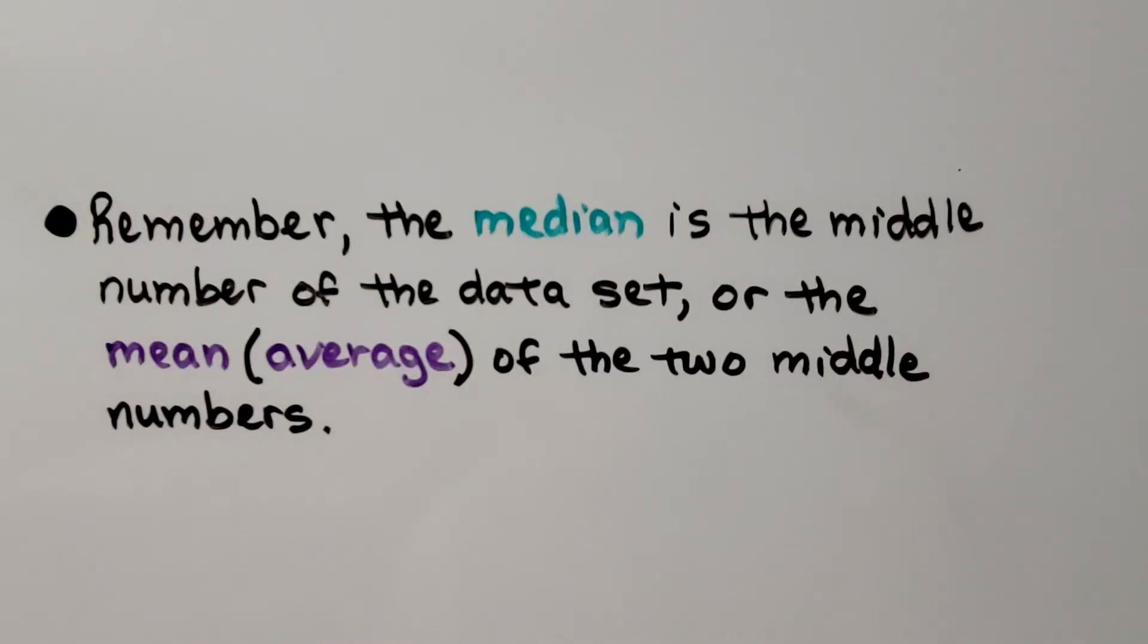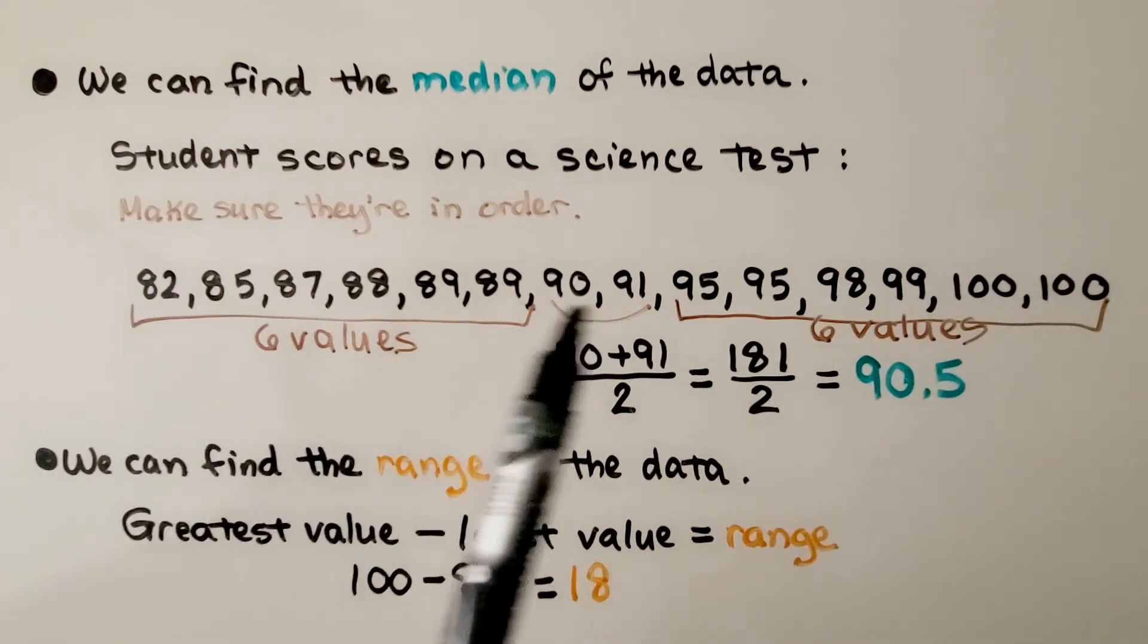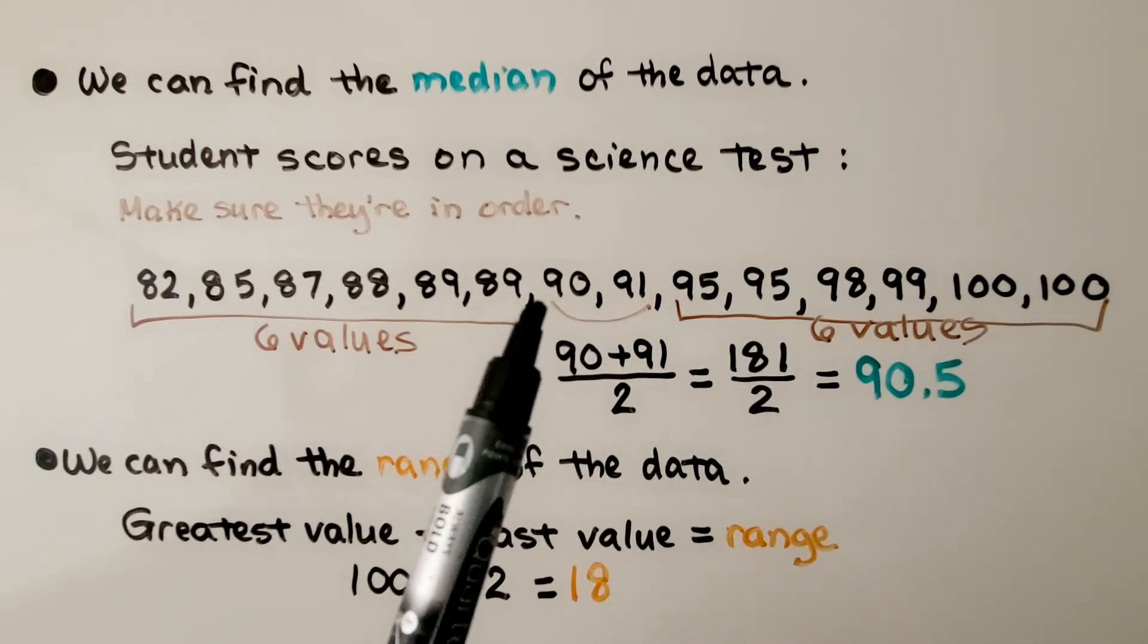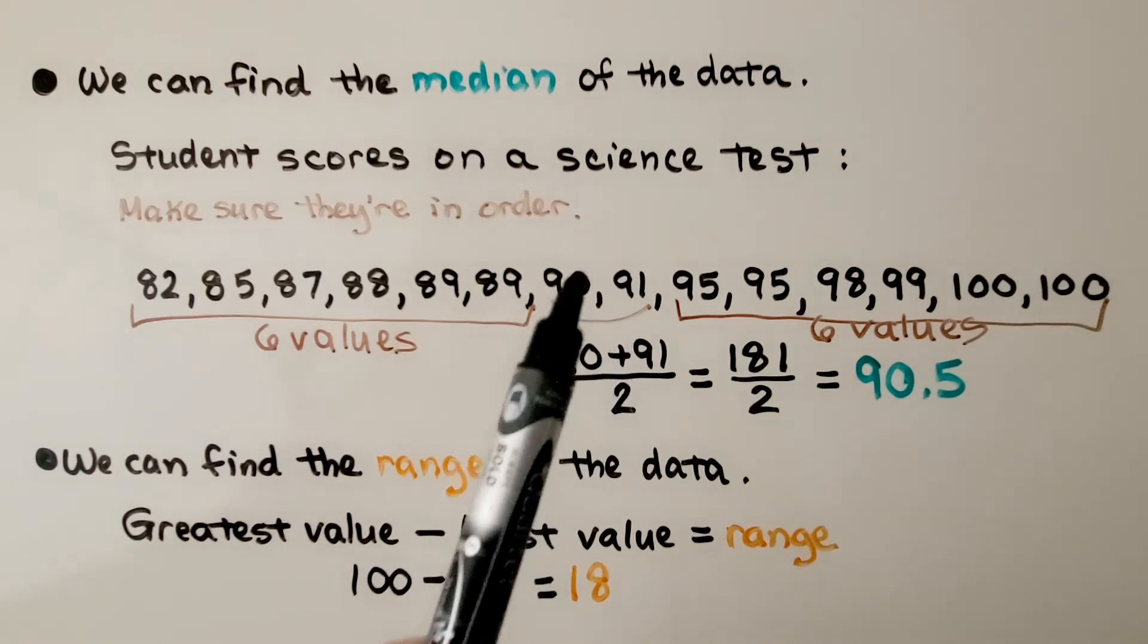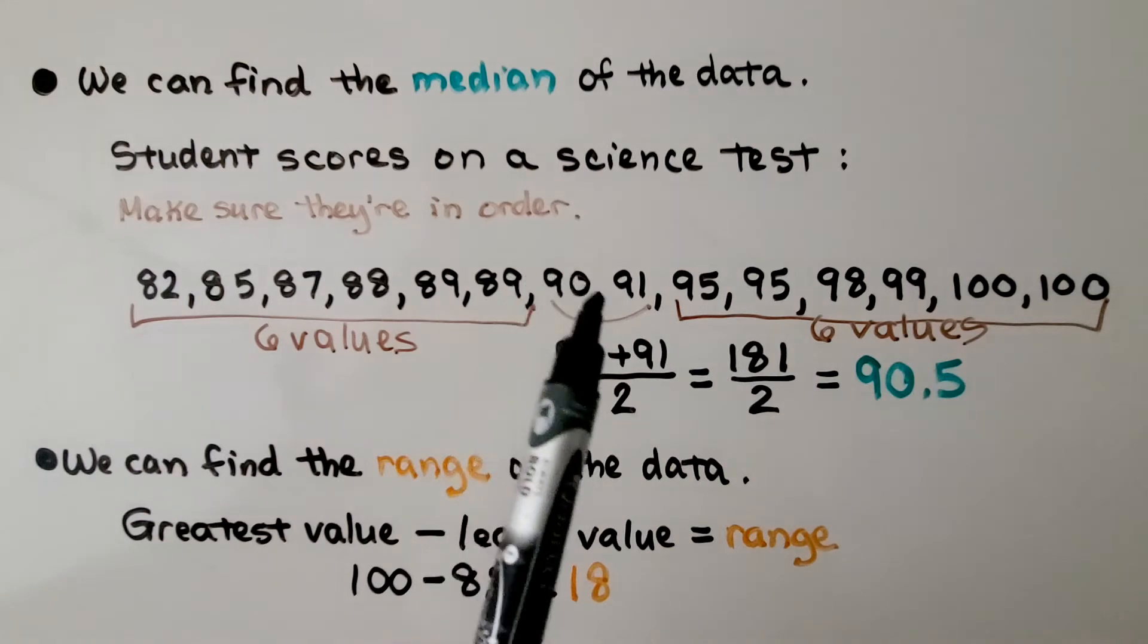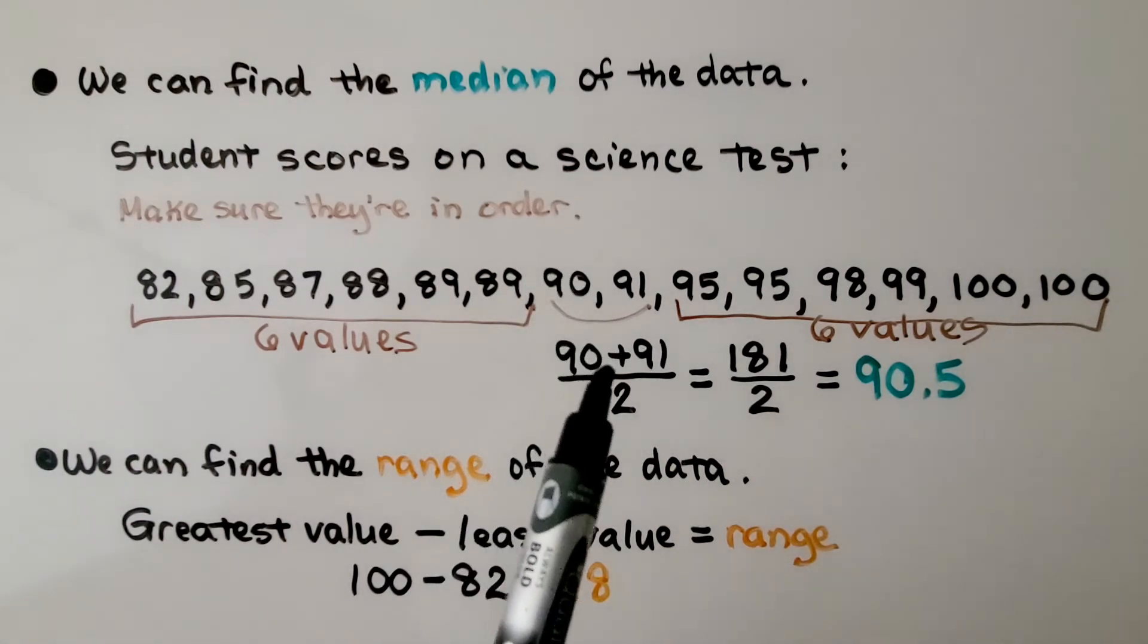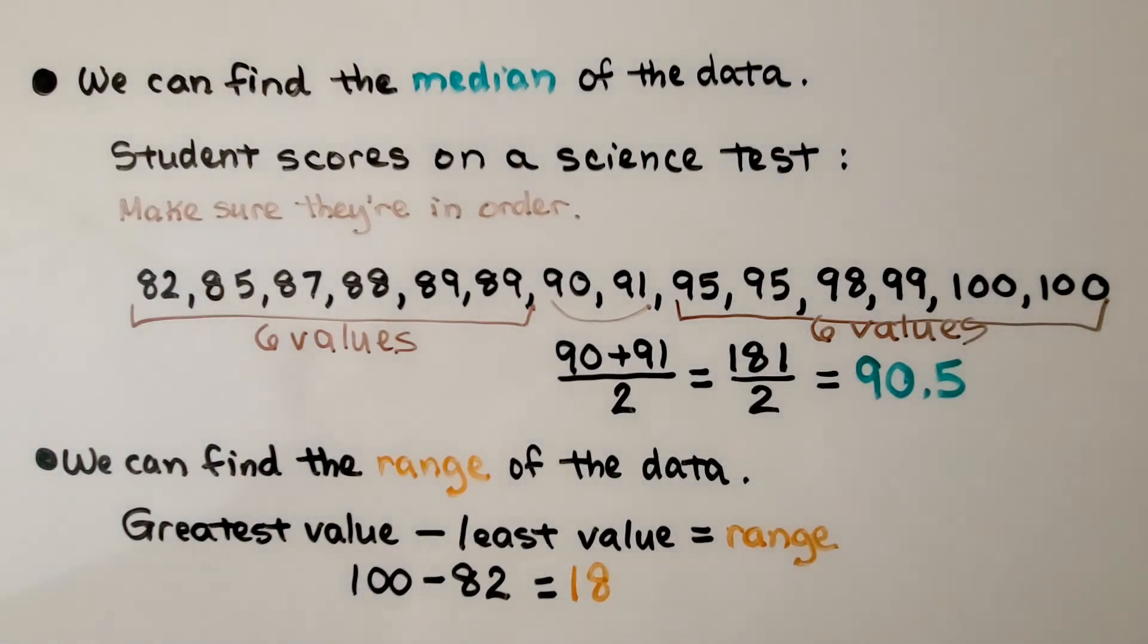Remember, the median is the middle number of the data set, or the mean of the two middle numbers. We can find the median of the data. We have our student scores on a science test. We make sure they're in order. We find the middle number. Here, we have 2 middle numbers. We have 6 values on this side, and 6 values on this side. We find the mean of those numbers, and we get 90.5, 90 and a half.